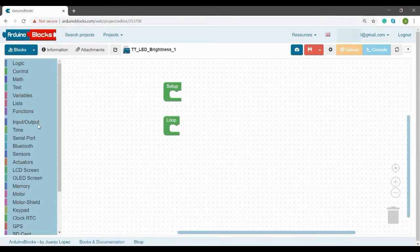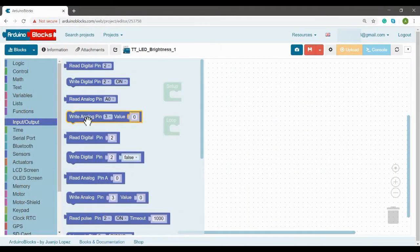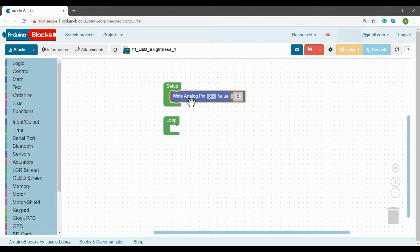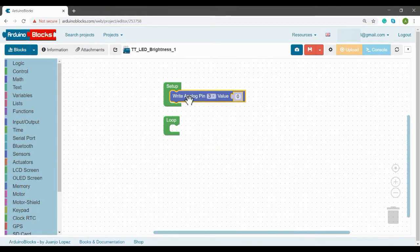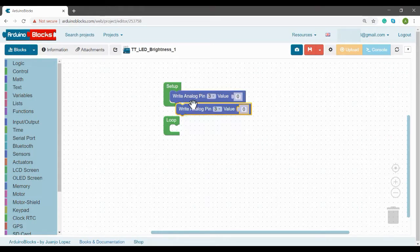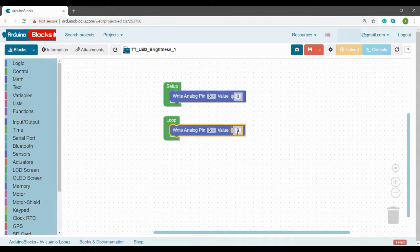First, from the input output section, we will take write analog pin and remember PWM pins of pin 3, 5, 6, 9, 10, and 11 are PWM. We have connected LED to pin 3 and initializing it with 0 value. Same block we will put in loop and initializing it with 255 for full brightness of LED.